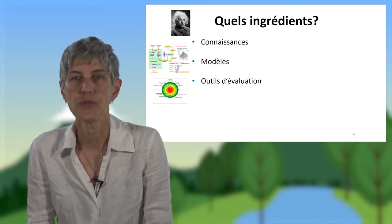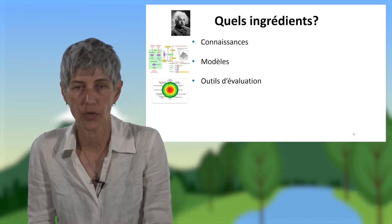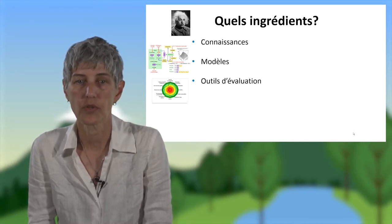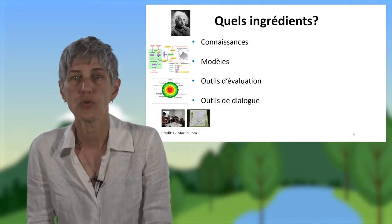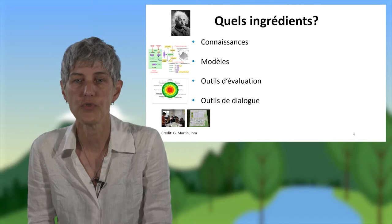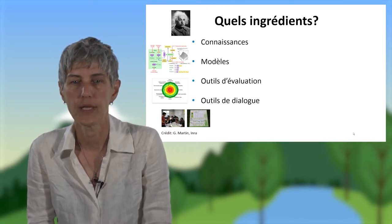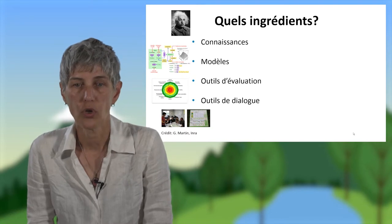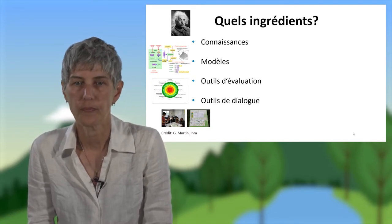Elle a aussi besoin d'outils d'évaluation qui permettent de considérer ensemble plusieurs types de performances — comme ici, sur ce petit radar — des performances économiques, sociales et environnementales. Et enfin, elle a besoin d'outils de dialogue pour concevoir à plusieurs, avec tous ces ingrédients, des systèmes agricoles durables. Ces outils de dialogue peuvent prendre plusieurs formes, comme ici sur ces photos, la forme d'un jeu de plateau.